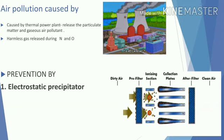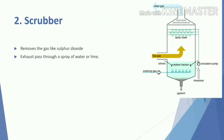The second method is the scrubber. It is the primary device to control gaseous emissions, and it removes gases such as sulfur oxides. In a scrubber, polluted air is passed through a chamber where lime or water is sprayed onto it, so that clean air comes out from another outlet.